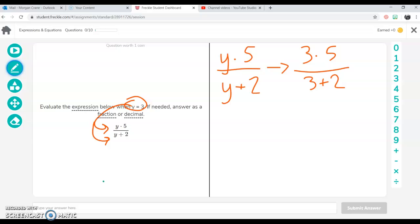Then PEMDAS, remember multiplication comes before addition and subtraction. So we're going to solve the top part first. I'm going to change my color. So we have 3 times 5, which equals 15. And now you can solve 3 plus 2, which equals 5.